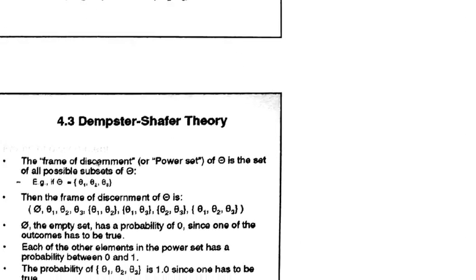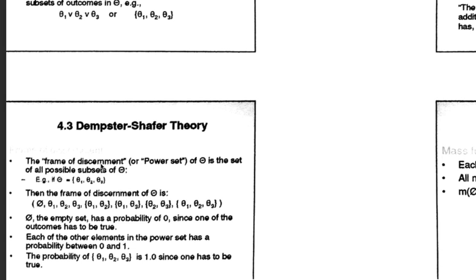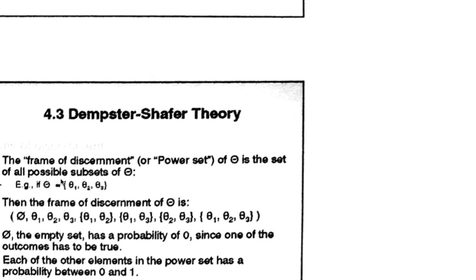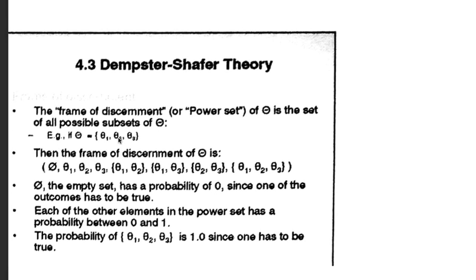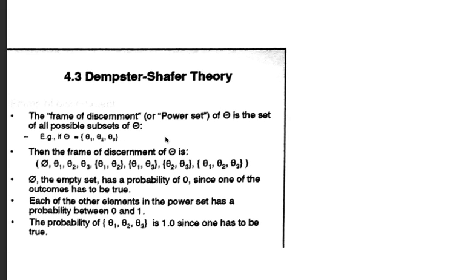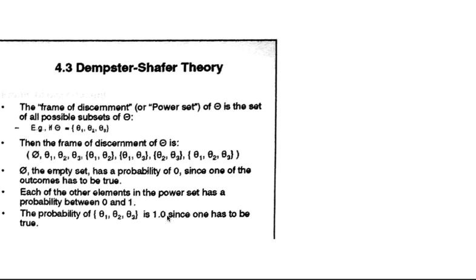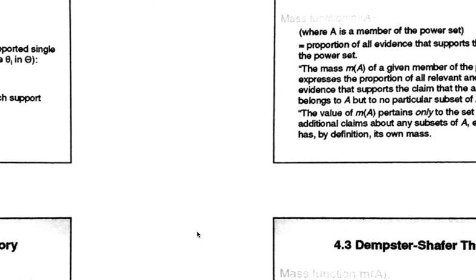First we try to get the frame of discernment, or power set. Theta is the set of all possible subsets of theta. So if I have belief theta and it has subsets theta 1, theta 2, theta 3 as the possible beliefs, then I try to get the frame of discernment. The probability of theta is 1, because something has to happen from this set only.